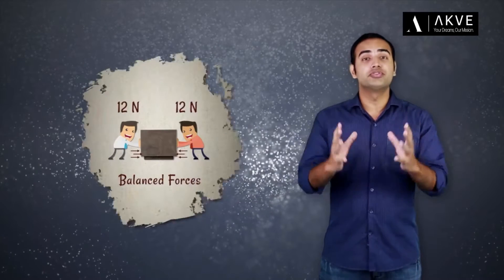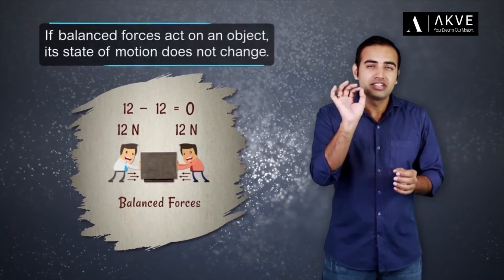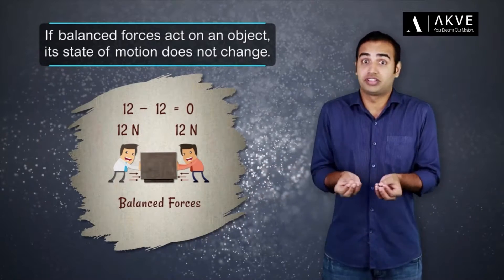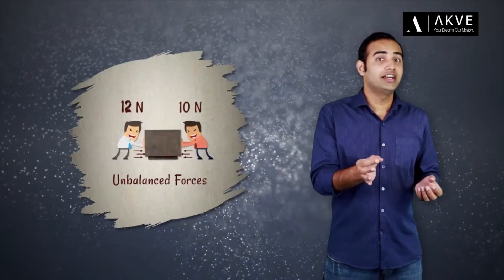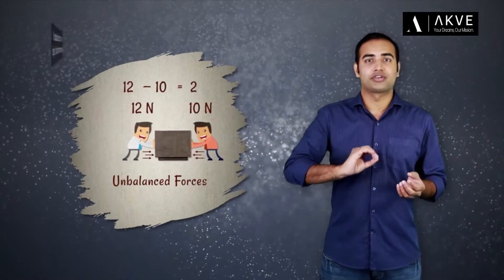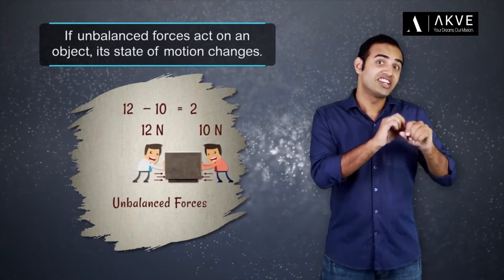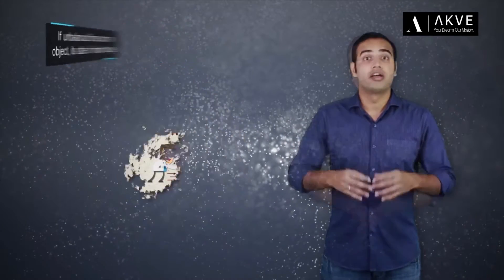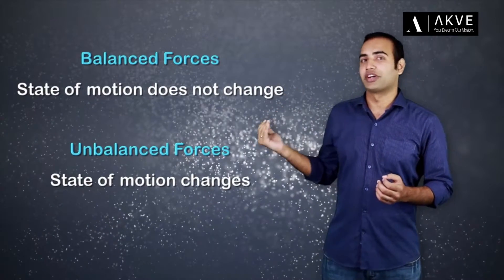If balanced forces act on an object, its state of motion does not change, because the resultant force is zero. On the other hand, if unbalanced forces act on an object, its state of motion changes because the resultant force is non-zero. Now, this is pretty straightforward, right? Who can confuse these ideas?